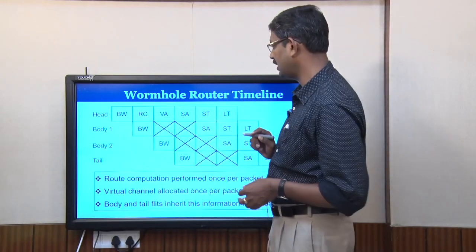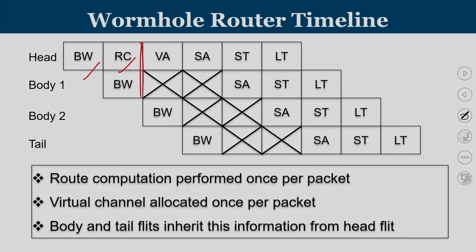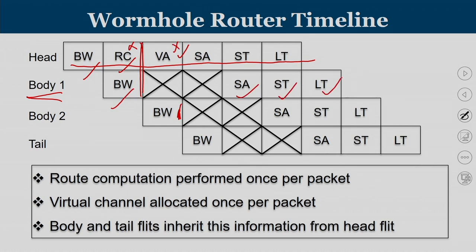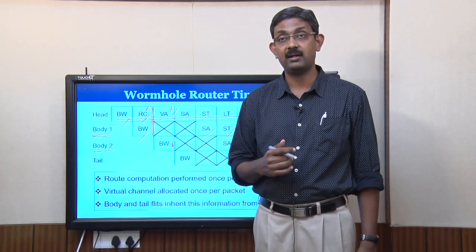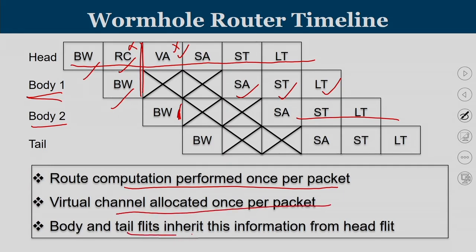Looking at the wormhole routing timeline: while performing route computation for the first flit, buffer writing happens for the second flit. While performing virtual channel allocation for the first flit, buffer writing happens for the next. For head flits, the stages are route computation, virtual channel allocation, switch allocation, switch traversal, and link traversal. For body flits, route computation and virtual channel allocation are not performed — only buffer writing, switch allocation, switch traversal, and link traversal. Route computation and virtual channel allocation are done only for the head flit; body and tail flits inherit the route and virtual channel allocated to the head flit.